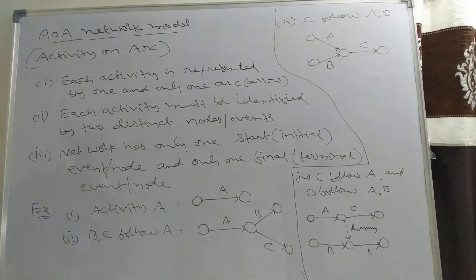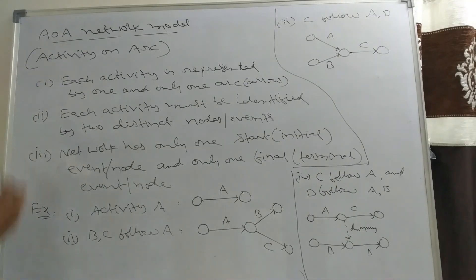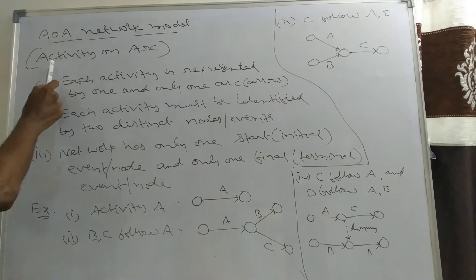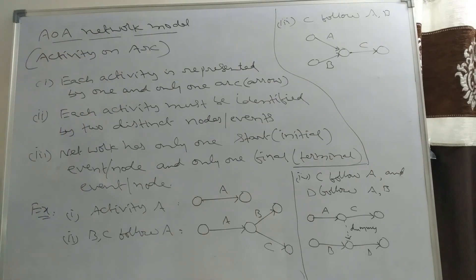We have two models to represent a project: the AON model and the AOA model. We consider only the AOA model. AOA means Activity On Arc — each activity is represented by an arc.